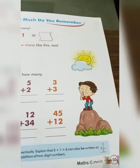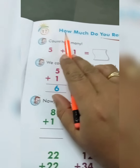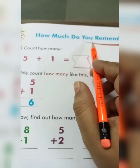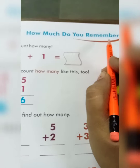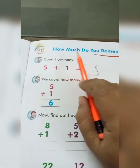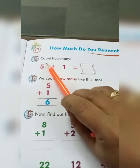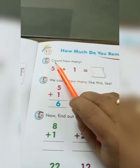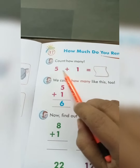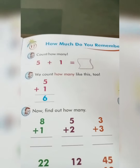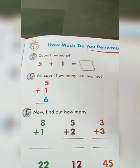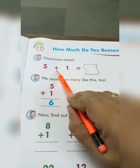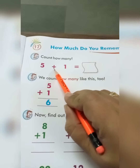Now page number 35, lesson number 17. How much do you remember? Read this — how much do you remember? Addition. This sign — how much do you remember? Addition — yani ki plus.